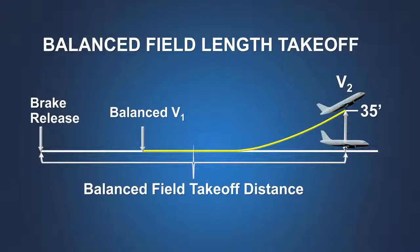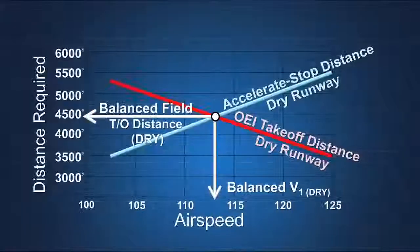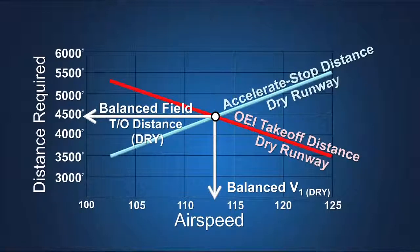Typically, the minimum field length required for takeoff in a two-engine turbojet transport category airplane is based on the balanced field length concept, where the accelerate stop distance is equal to the one engine inoperative takeoff distance. The balanced field length can be obtained when, for a given takeoff weight, a V1 speed is selected such that these two distances are equal.